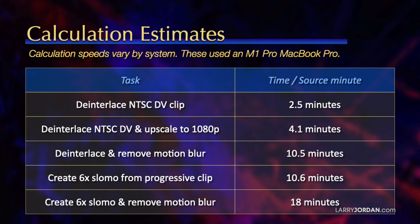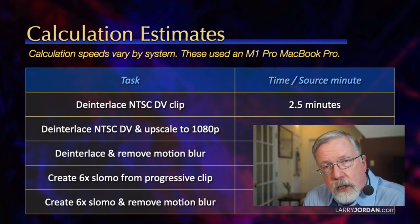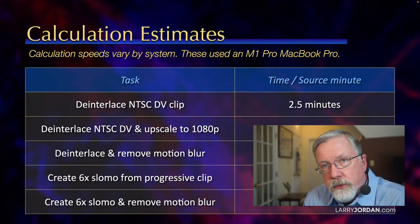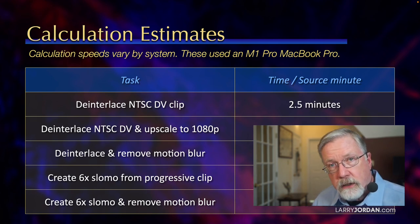The downside to Topaz Video AI is that it takes time. If I de-interlace an NTSC DV clip, it takes two and a half minutes per source minute. To de-interlace and upscale to 1080p is four minutes per source minute. To de-interlace and remove motion blur is 10.5 minutes. To create a 6x slow-mo from a progressive clip, 10 minutes. Slow-mo and remove motion blur, 18 minutes. The 8x video of the cylinders inside the Queenstown Ferry took 45 minutes to create a 30-second piece. So it takes time and a fast computer, but if you've got the time, the results are worth it.